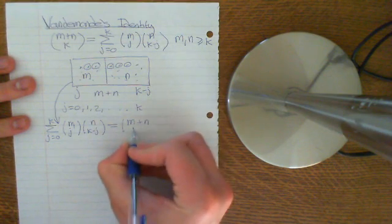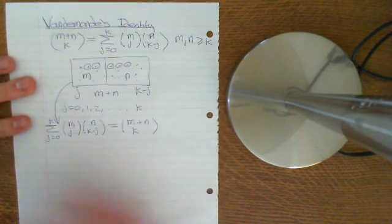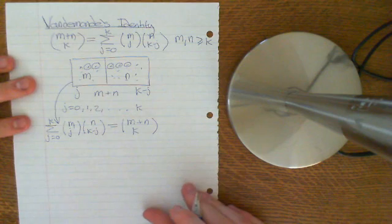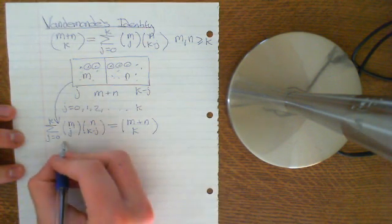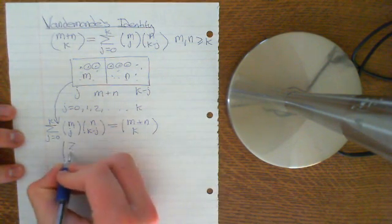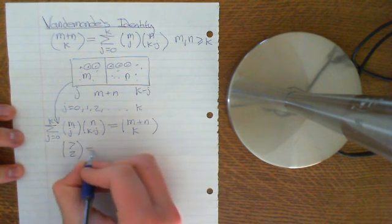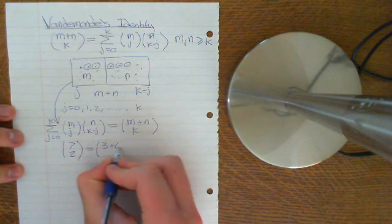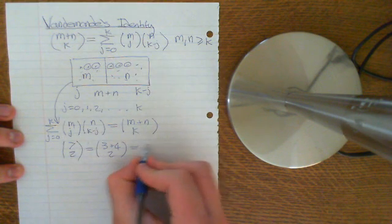So it's a very simple, intuitive proof of that. And proving that from an algebraic standpoint is just painful. So the actual practical application of this is, say you've got something like seven choose two, you could rewrite this as three plus four choose two, and then you could apply Vandermond's identity.